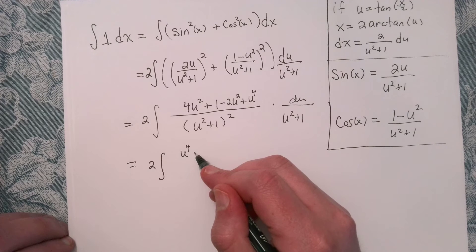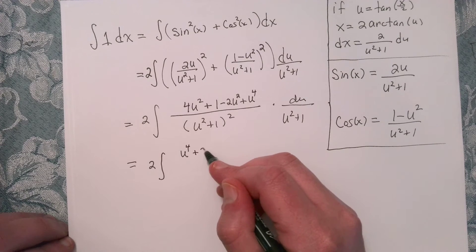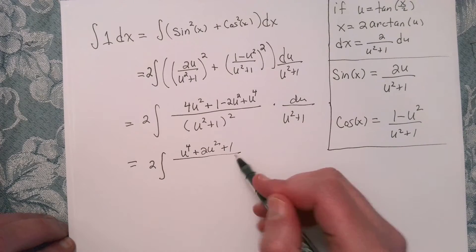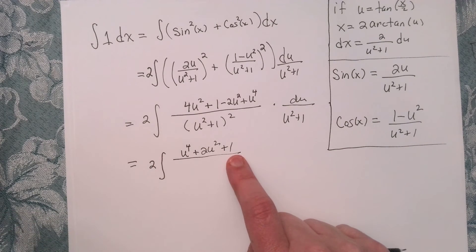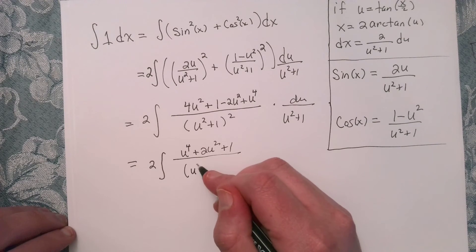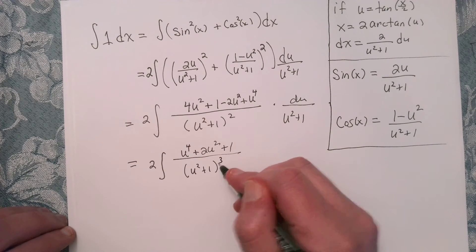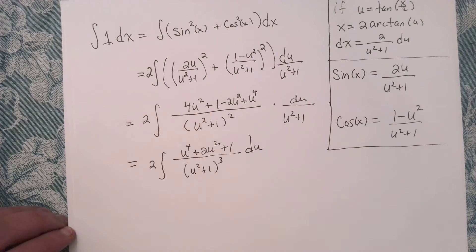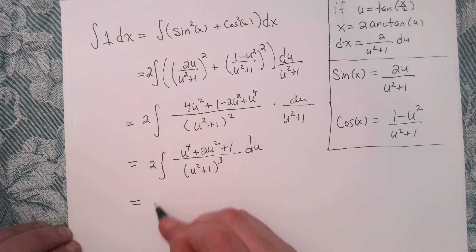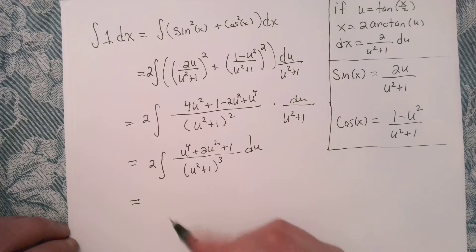So combining that numerator, so I've got u to the fourth plus 2u squared plus 1. How nice is that? So that's a perfect square trinomial, right? And then downstairs, we've got this u squared plus 1 quantity cubed. And then of course, du. All right, so that seems nice. Let's go ahead and factor that numerator.